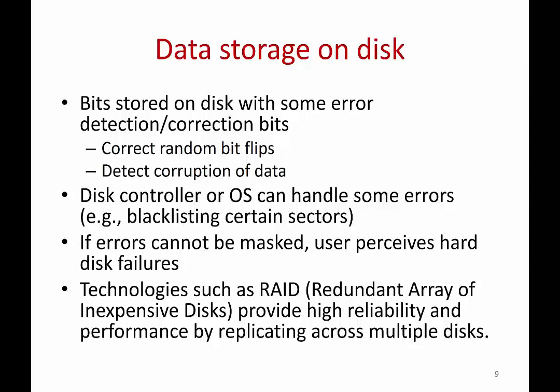The disk controller and operating system can also handle errors — for example, if a sector has gone bad, it can be blacklisted. But sometimes, despite all correction measures, users still perceive hard disk failure: some sectors go bad, some files can't be accessed. To avoid such issues, newer technologies like RAID (Redundant Array of Inexpensive Disks) use replication to store data across multiple disks, so that even if one fails, high reliability and high performance can still be provided. There are several techniques to build reliable and fast storage.